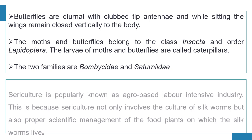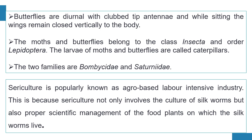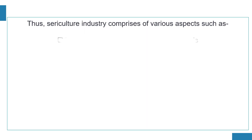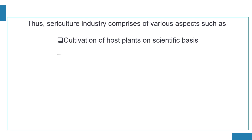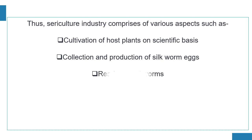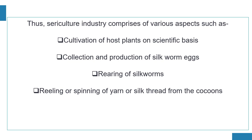Sericulture is popularly known as an agro-based, labor-intensive industry. This is because sericulture not only involves the culture of silkworms, but also proper scientific management of the food plants on which the silkworm lives. Thus, the sericulture industry comprises various aspects such as cultivation of host plants on a scientific basis, collection and production of silkworm eggs, rearing of silkworms, reeling or spinning of yarn or silk thread from the cocoons, fabrication or dyeing, and finally marketing.